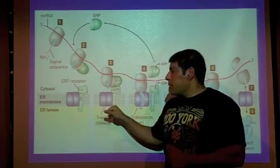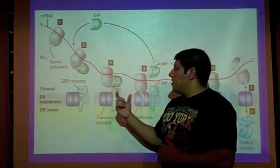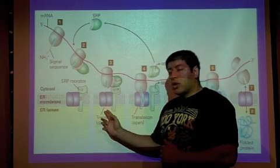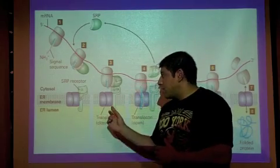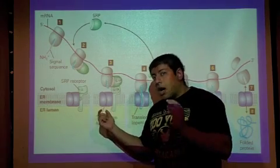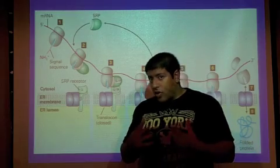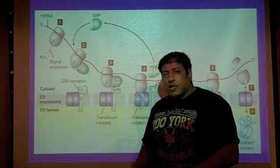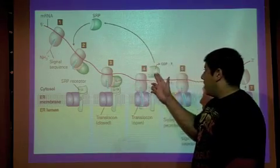Once at the ER membrane, the SRP binds to an SRP receptor, and then this also helps to dock or attach the ribosome onto a translocon. This translocon is what's known as a gated channel found on the ER membrane. And it's gated because it's always closed up until a ribosome binds to it. So in other words, you could call the translocon a ribosome-gated channel. So once the ribosome has been docked to the translocon, the SRP has done its job and it leaves.